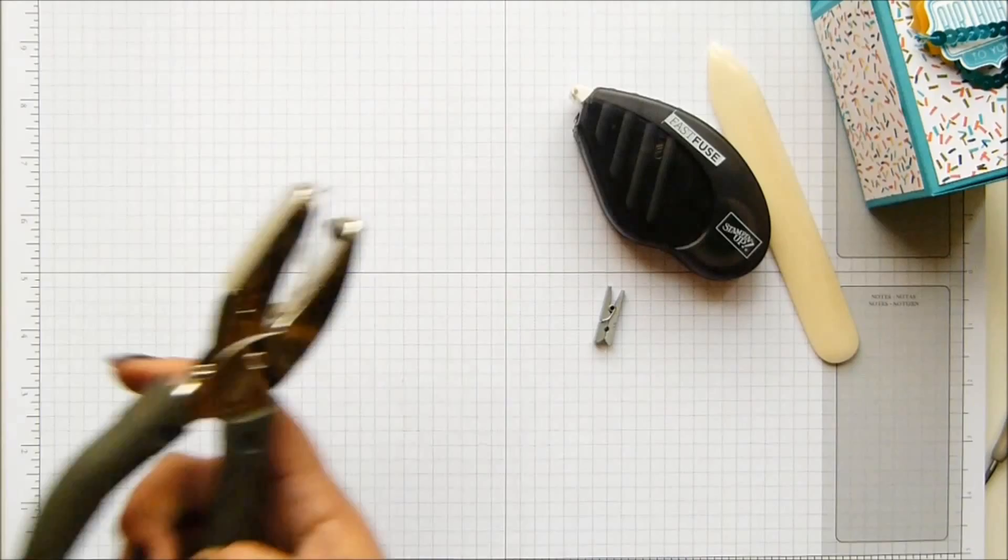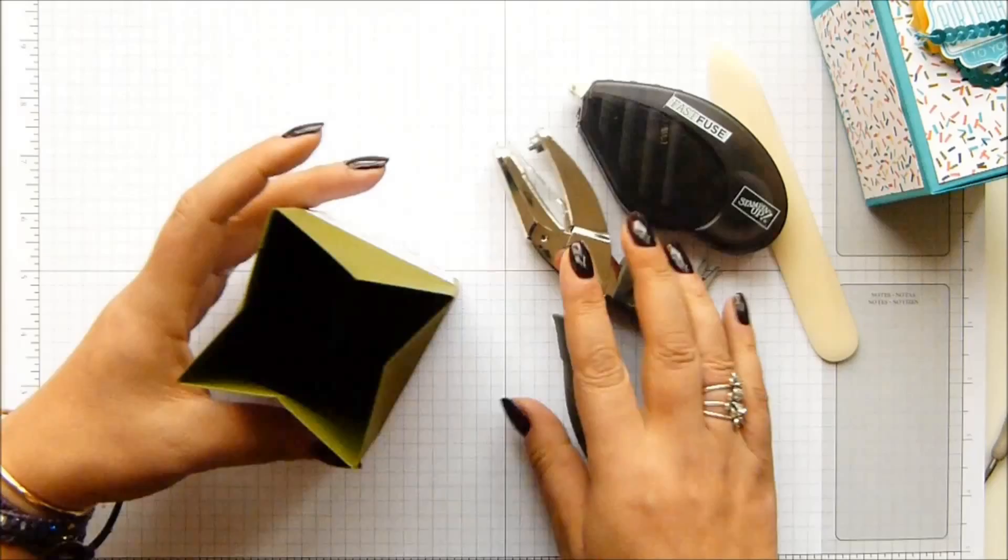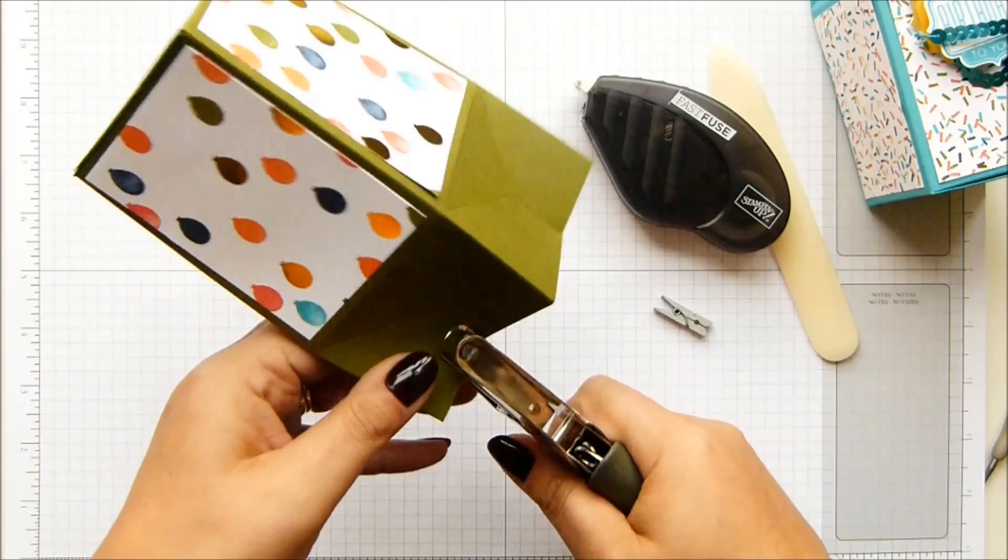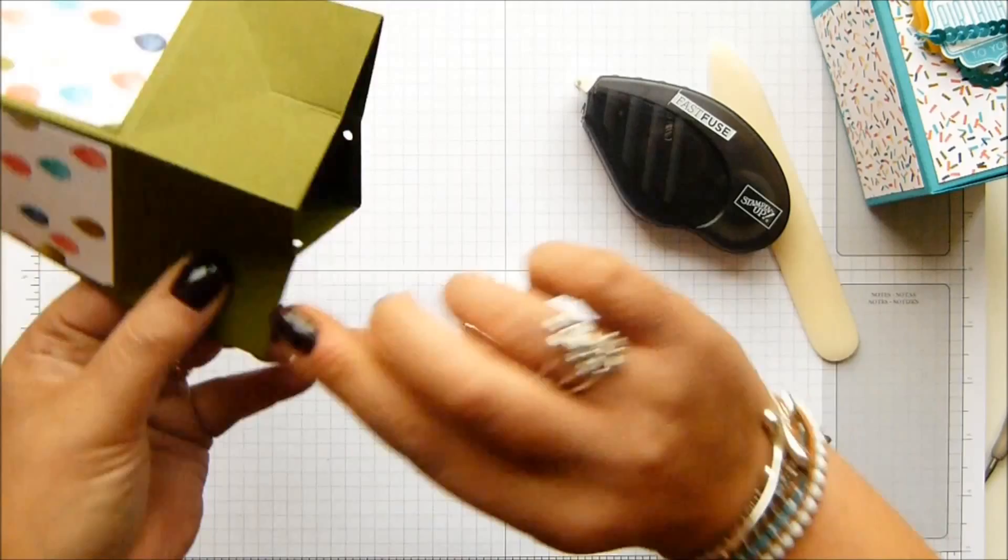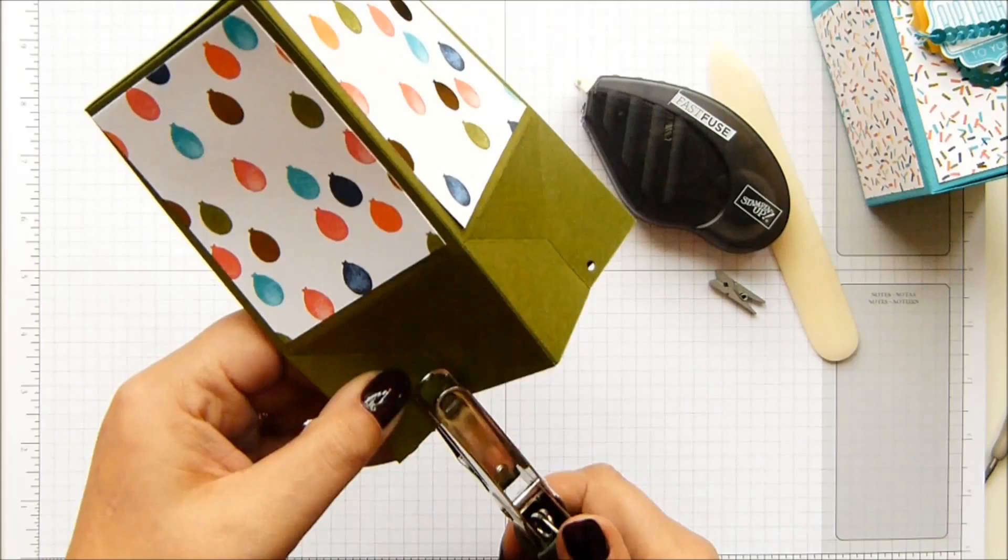This is my one eighth of an inch circle punch. When you've pushed it in, you've got basically the points of a star. Grab one and squeeze it together and that's where you're punching your hole. It will go through both. Do the same over there. Just keep pinching and punching.